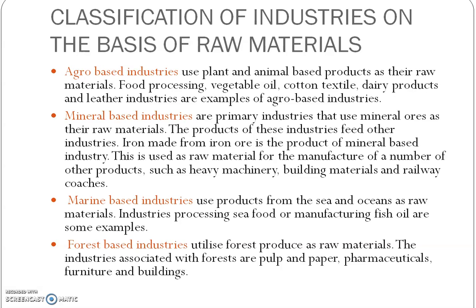Agro-based industries are those industries which use agricultural products — plant and animal-based products — as their raw material. For example, the cotton textile industry, the sugar industry, the paper industry, etc. All these industries are dependent on various agricultural products.